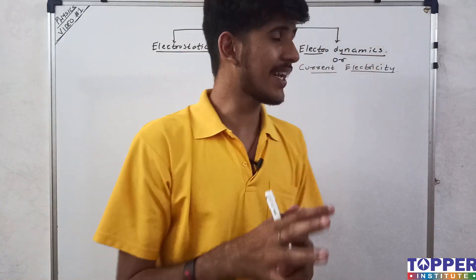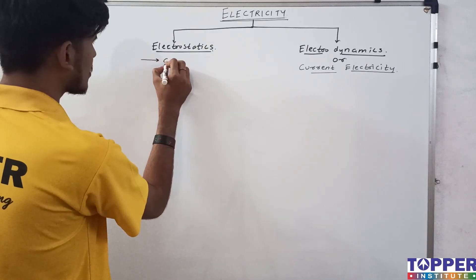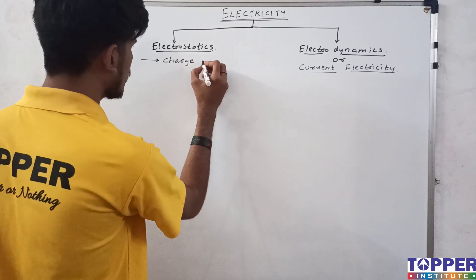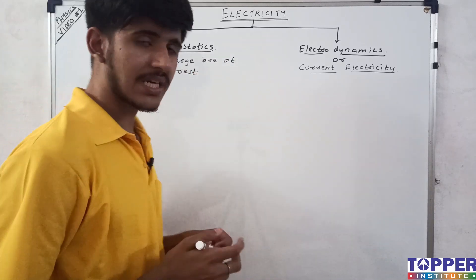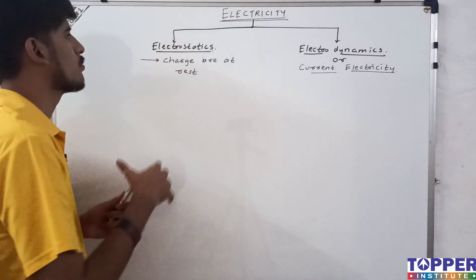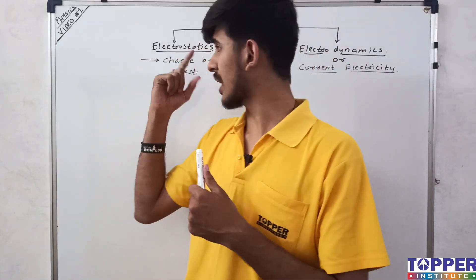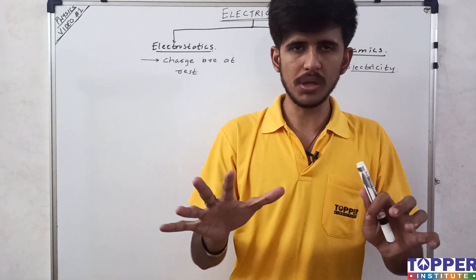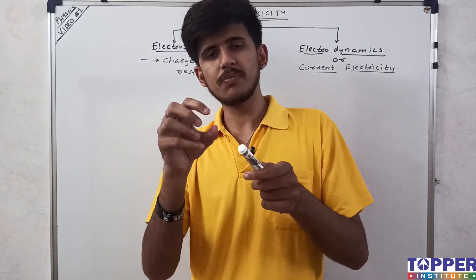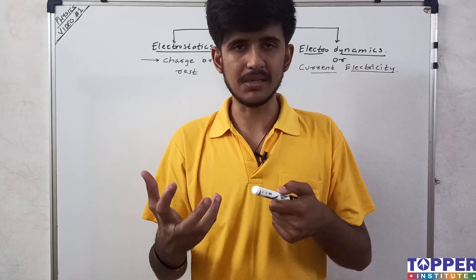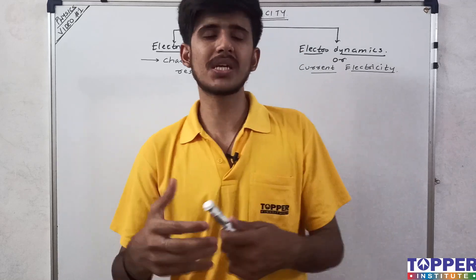What is Electrostatics? This is the study of electricity where we assume that charges are at rest. When we study electricity assuming charges are stationary, we specifically call it Electrostatics. You'll study two full chapters of Electrostatics in class 12. In class 10 you won't study it separately — just know that in insulators, when rubbing occurs, charge accumulates but cannot move because an insulator is a non-conducting material, so charges remain static.